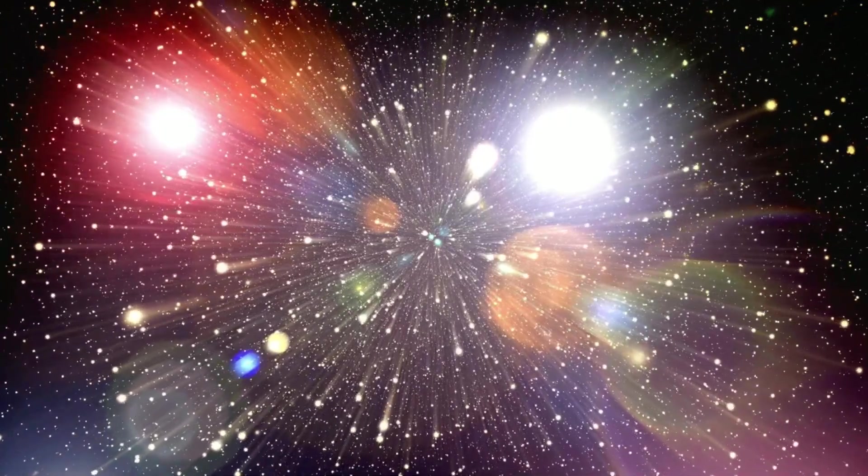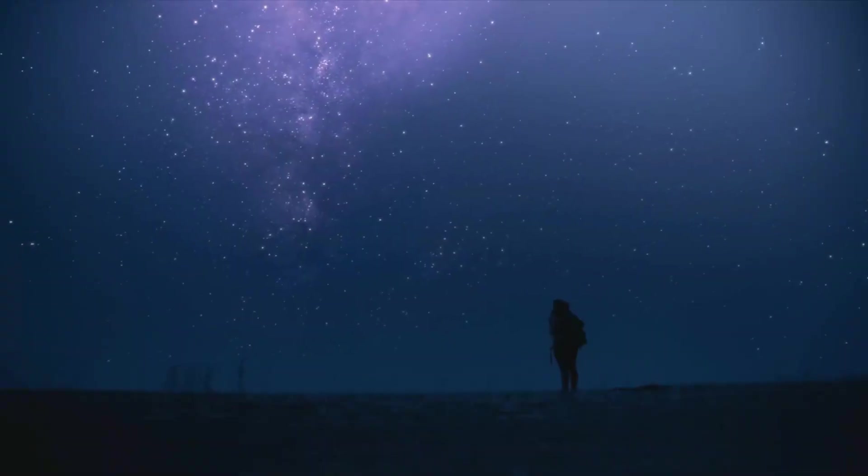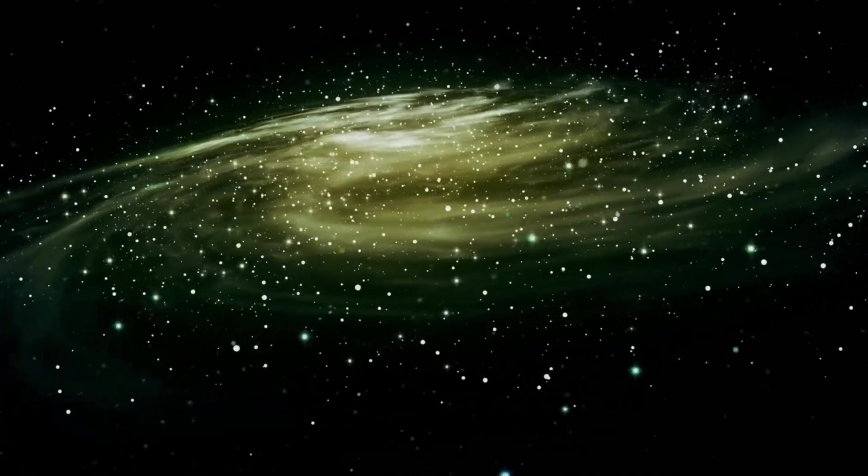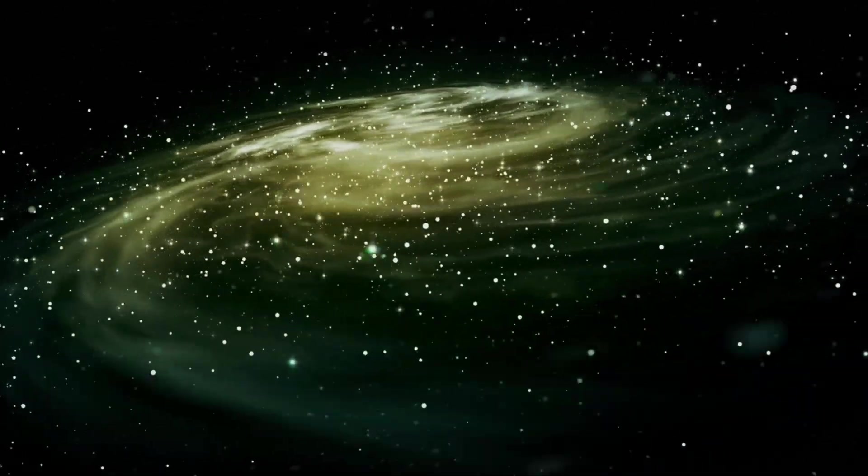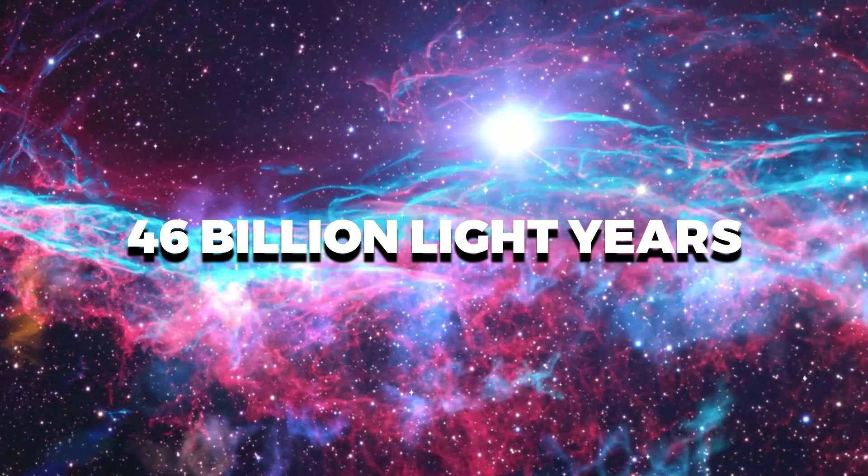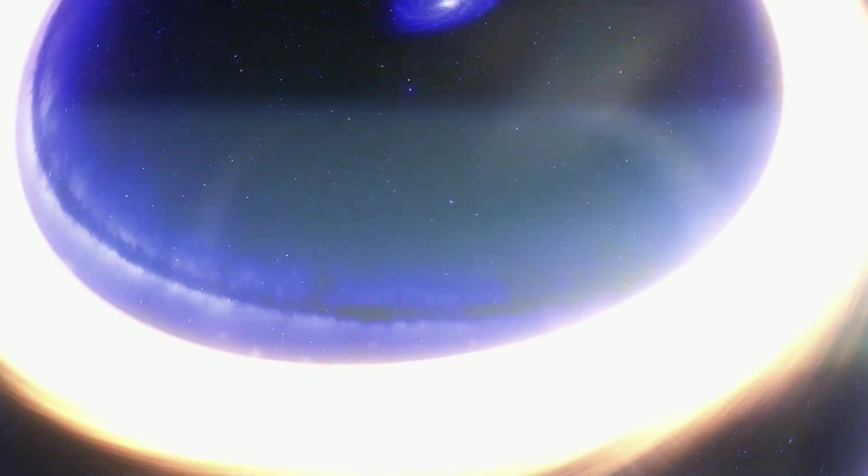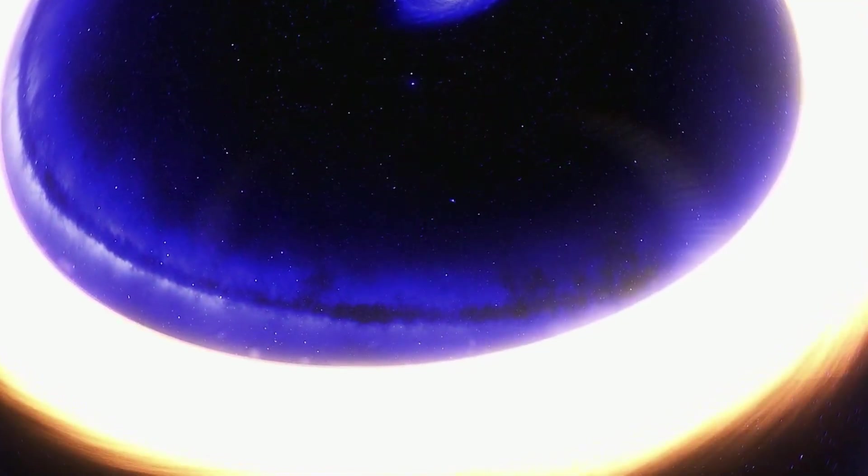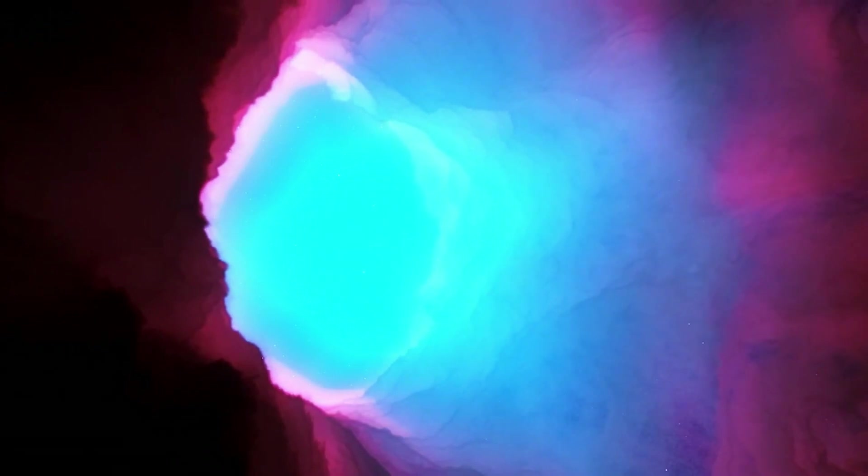So the observable universe is a sphere, and we are exactly in the center of this sphere, because we can see in all directions at a similar distance, which is currently about 46 billion light years. This is the current distance of the boundary of the observable universe, because at the time when information from these farthest regions reached us, the universe was expanding all the time in the meantime.